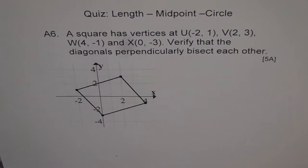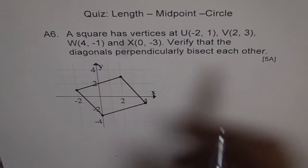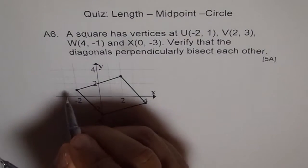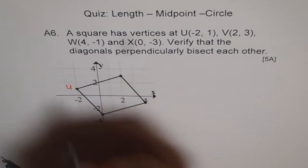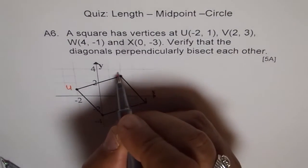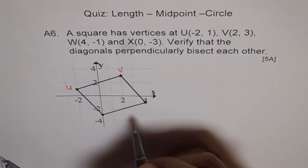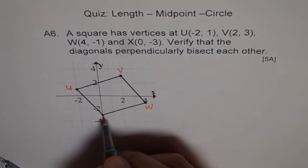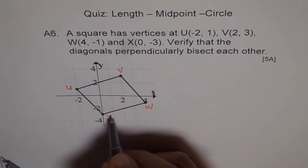Fortunately the graph is drawn for us. Normally you are given graph paper and you need to sketch it. Let's verify our vertices. U is (-2, 1), so this is U for us. V is (2, 3). W is (4, -1). X is (0, -3).